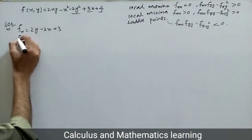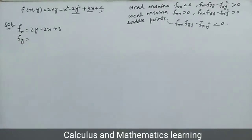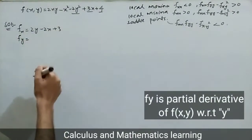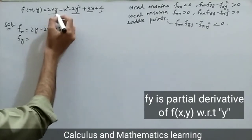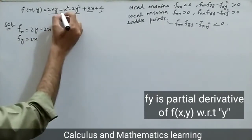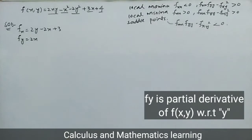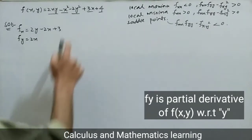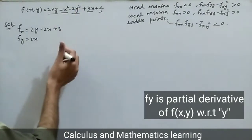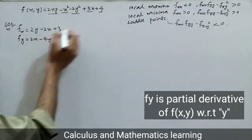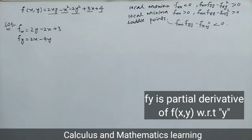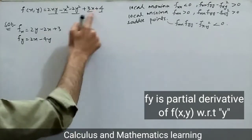Now finding fy: we differentiate the function with respect to y. The derivative of 2xy with respect to y gives 2x, which is a constant since we differentiate with respect to y. The derivative of minus 2y squared with respect to y gives minus 4y, and 3x and 4 give zero since they are constants with respect to y.